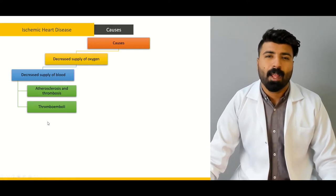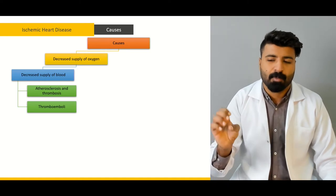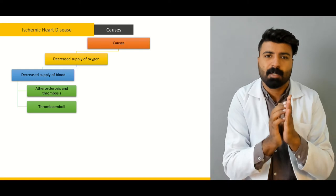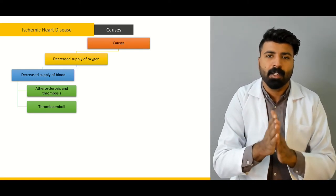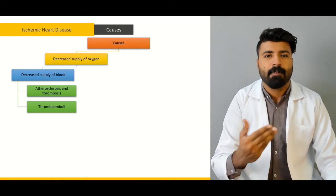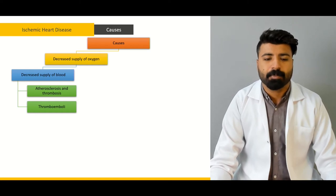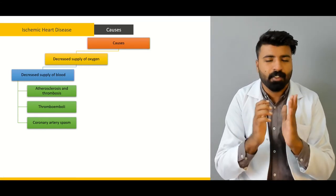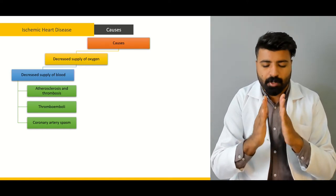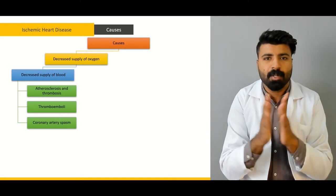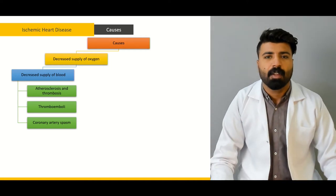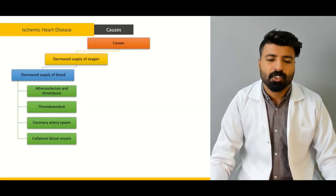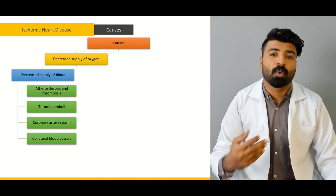Thromboemboli occur when a thrombus forms at one location, detaches, moves elsewhere, and blocks that area - the same pathophysiology applies, where something blocks the lumen and blood doesn't reach that area of the heart. Coronary artery spasm is another cause: without any occlusion or thrombus, the coronary artery simply contracts, reducing the lumen. Even without blockage, the spasm means insufficient blood reaches that area, and ischemic heart disease can still occur.